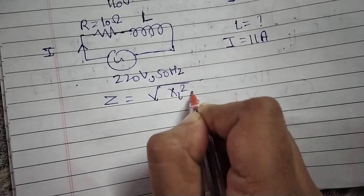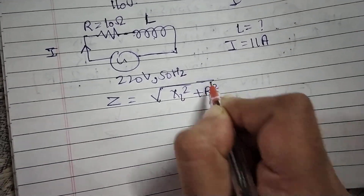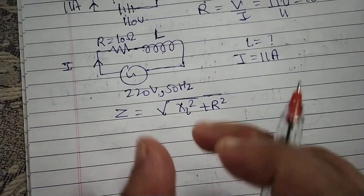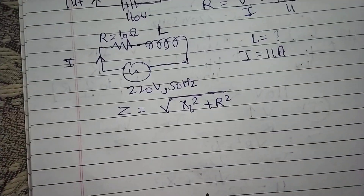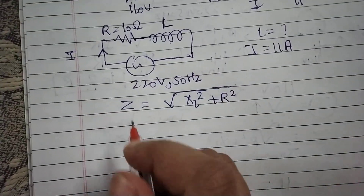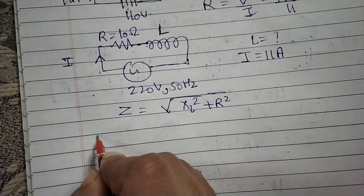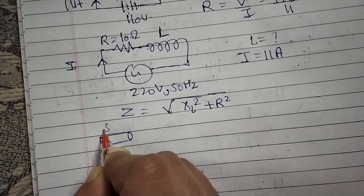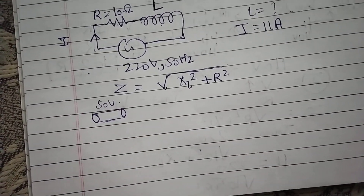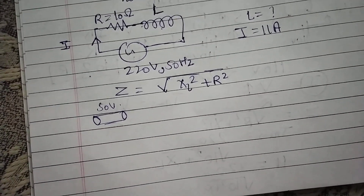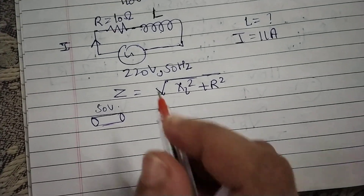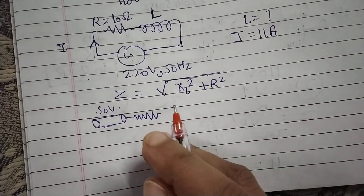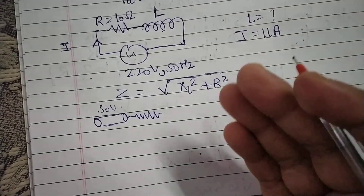The impedance equals the square root of XL squared plus R squared. So as impedance increases, the voltage drop increases. For example, consider a tube light that can take only 50 volts but you have 220 volts — you need to drop the extra voltage.